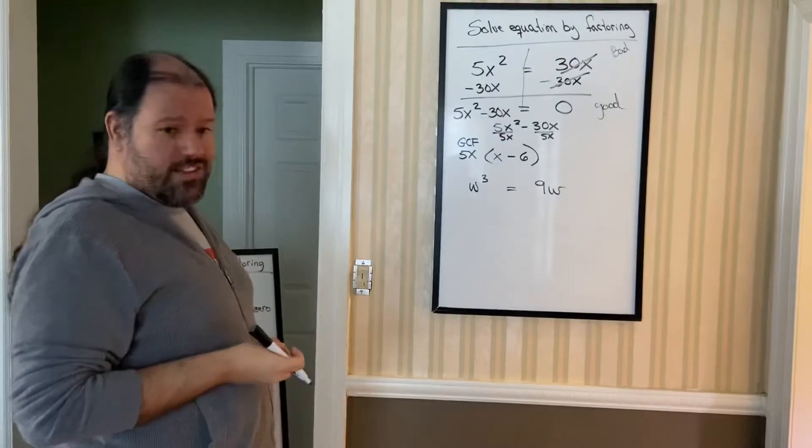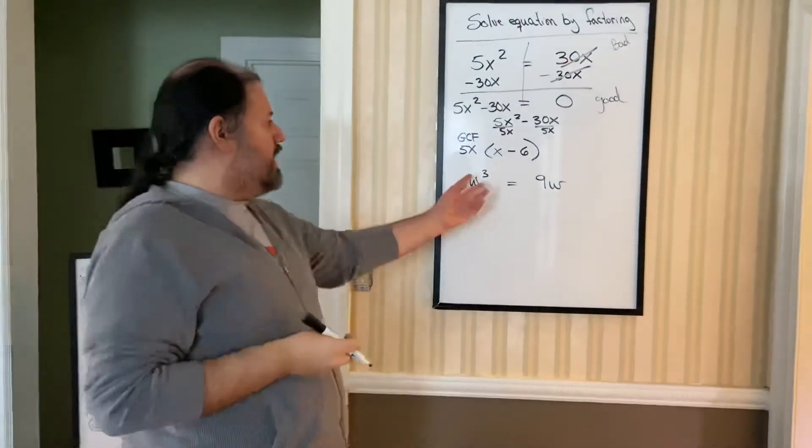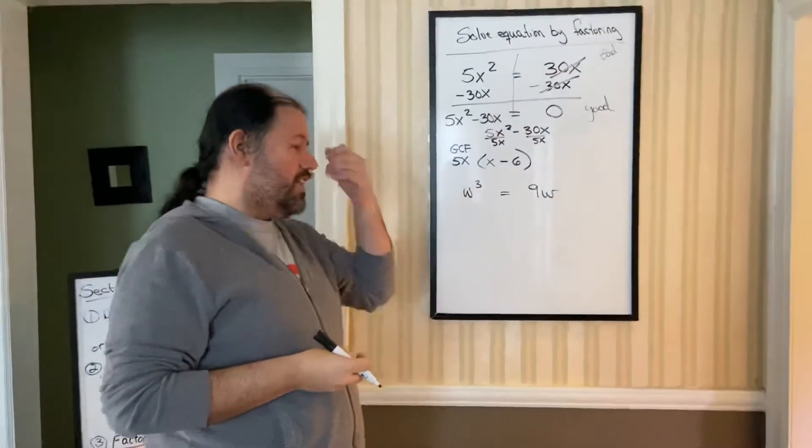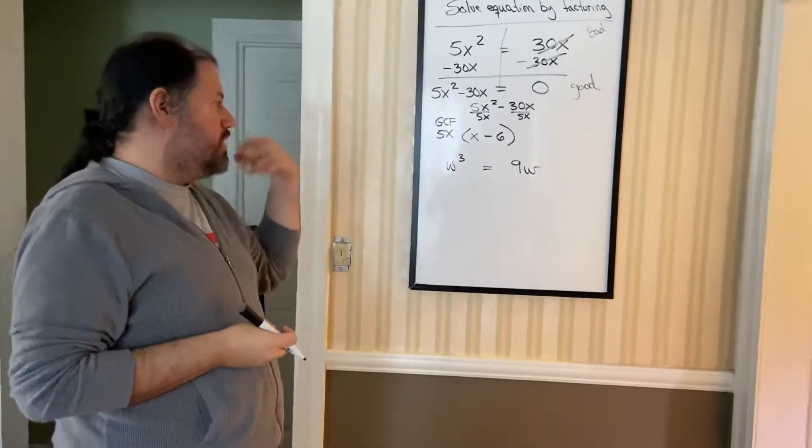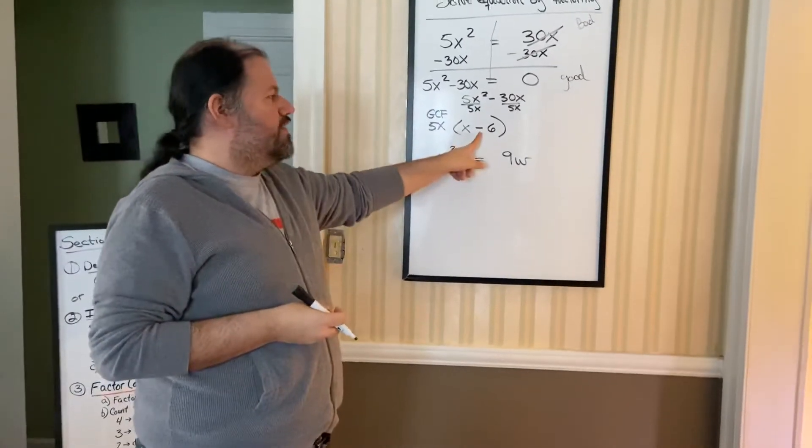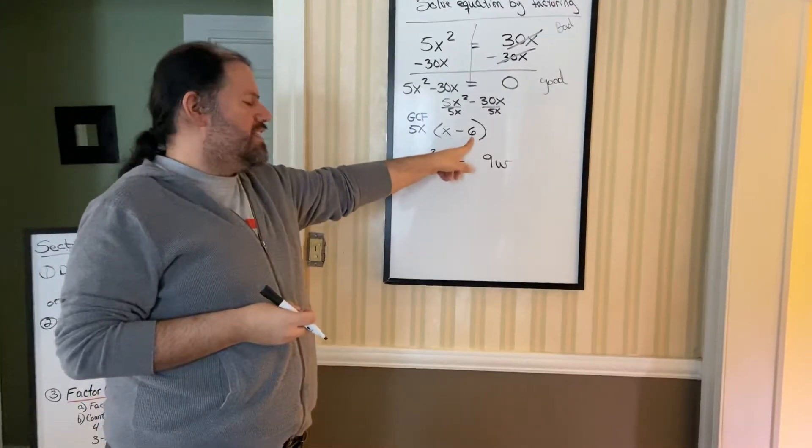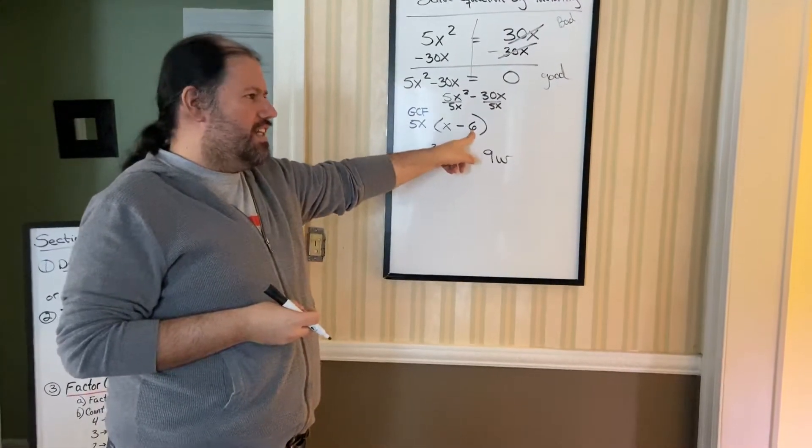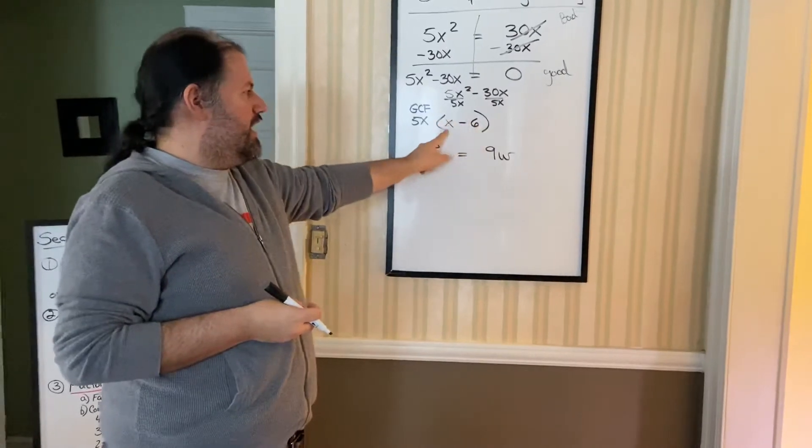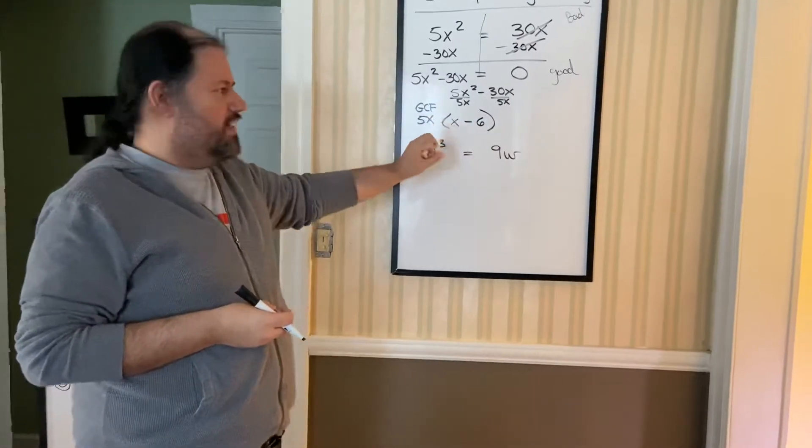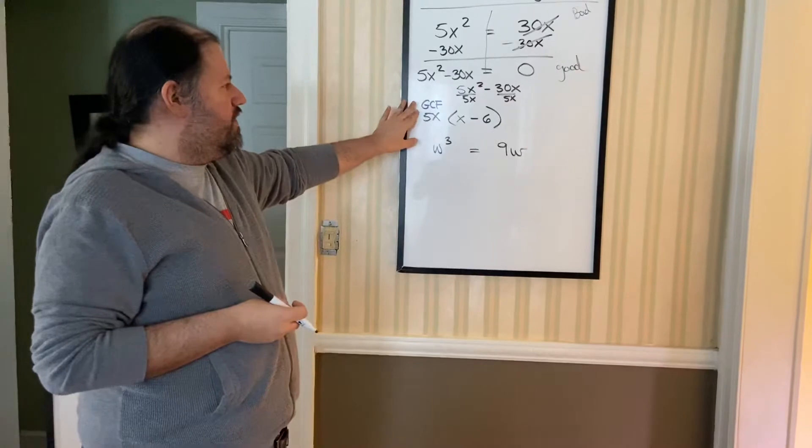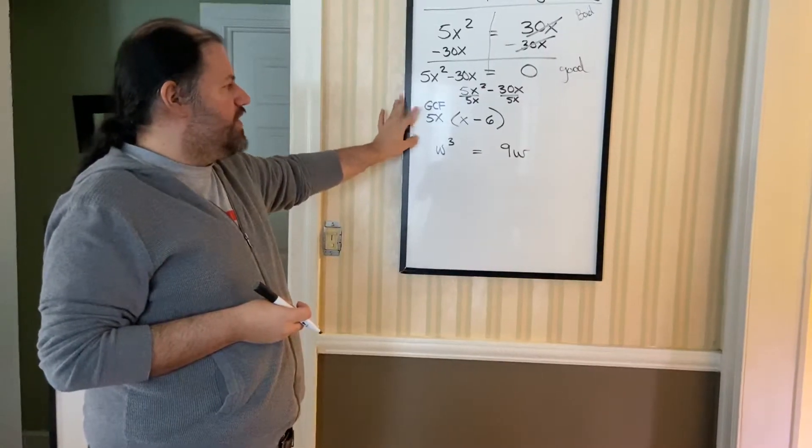We're done factoring. Because the next step would be count how many terms are left over. Notice it's two terms. But it doesn't fit the definition of difference of squares. Yes, you have a minus sign, but 6, remember from the other day, is not a perfect square. And x is not a perfect square. So we are going to leave this as factored completely.